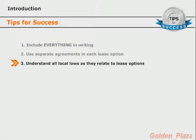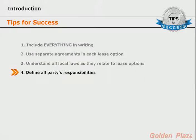Tip number three is to make sure you understand all local laws as they might apply to lease options. Most states have passed laws that govern certain aspects of how lease options can be performed. You need to understand these laws and abide by them. Additionally, you should understand the landlord-tenant laws in your area, since the tenant buyer is considered a renter until they exercise the option.